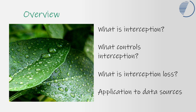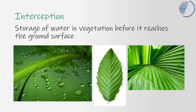Interception is defined as the storage of water in or on vegetation before it reaches the ground surface. Here we have a leaf — it's rained on the leaf and water droplets have formed on the surface and are being held there. The amount of interception will depend on the shape and form of the leaf. This leaf has specific runnels where water could be stored, whereas this one from an older tree is relatively flat.